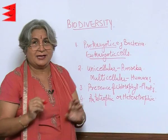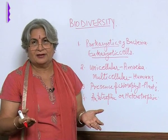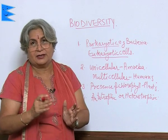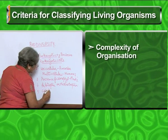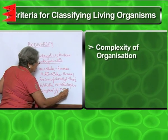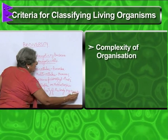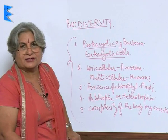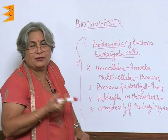Then lastly, if the organism is multicellular, what is the level of organization? Are the cells arranged into only tissues, or are they also arranged into organs and organ systems? So the complexity of organization matters. In this way we can classify organisms, and a kind of hierarchy is created — we are moving from simple to complex.